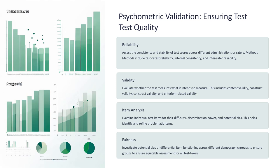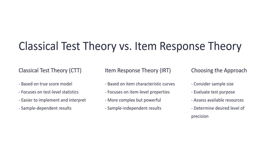Psychometric validation of exam questions is critical for quality assurance, especially in high-stakes summative exams. If a candidate fails and challenges you in a court of law, you must be able to show reliability, validity, item analysis, and fairness. This is a complex procedure usually in the role of a psychometrician. Classical Test Theory is based on true scores of each test, while Item Response Theory is based on individual item characteristic curves, focusing at the item level — though it can be resource intensive.